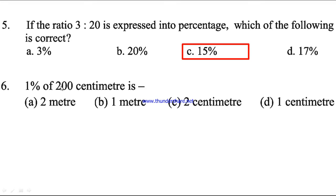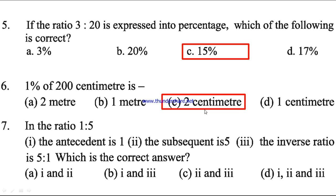Number 6. 1% of 200 centimeters is 2 centimeters. Question number 7. In the ratio 1 is to 5, number 1, the antecedent is 1. Number 2, the subsequent is 5. Number 3, the inverse ratio is 5 is to 1. Which is the correct answer? All the 3 are the correct answer and that's why the answer is D, 1, 2, and 3.